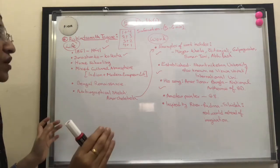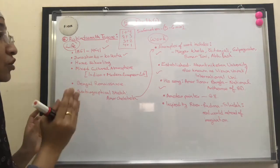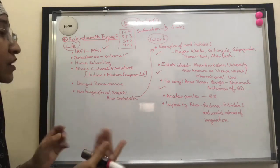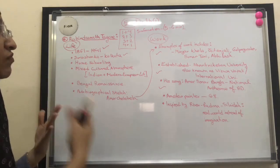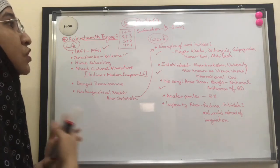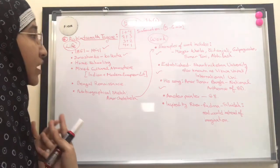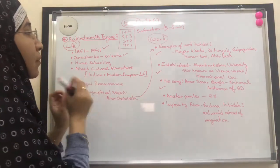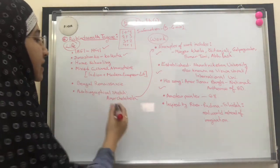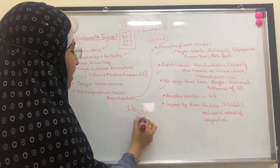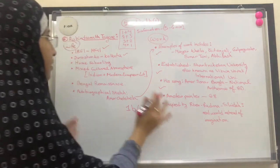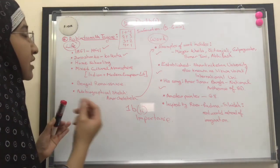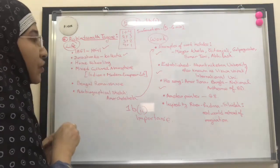Some information I didn't include because those points are quite difficult to remember. Some I kept for the importance part in Roman II. So not all book information goes into Roman I — some are reserved for Roman II, and some are omitted entirely if they are too hard to memorize. This way you can manage your time and structure your answer clearly.